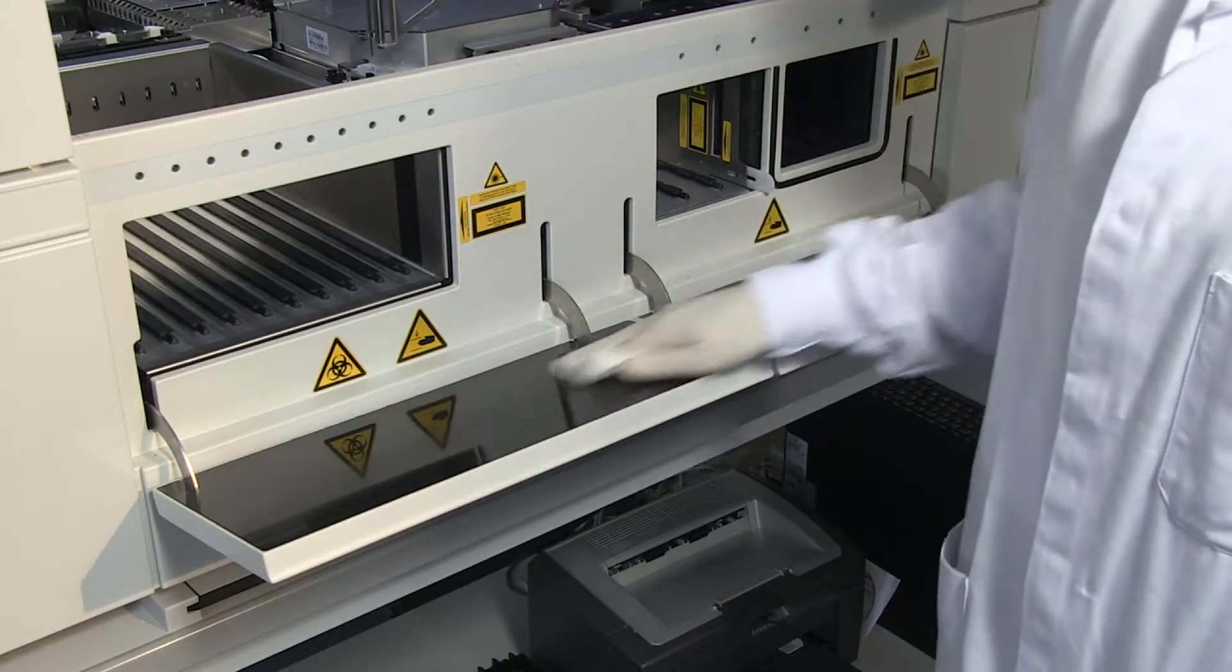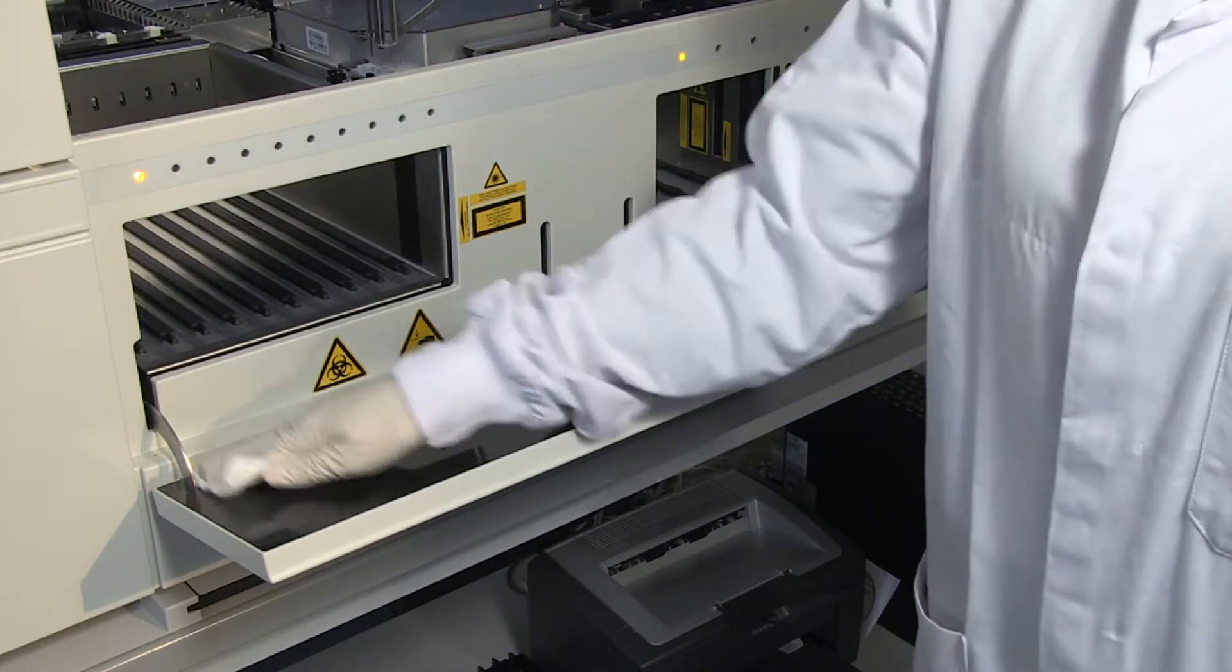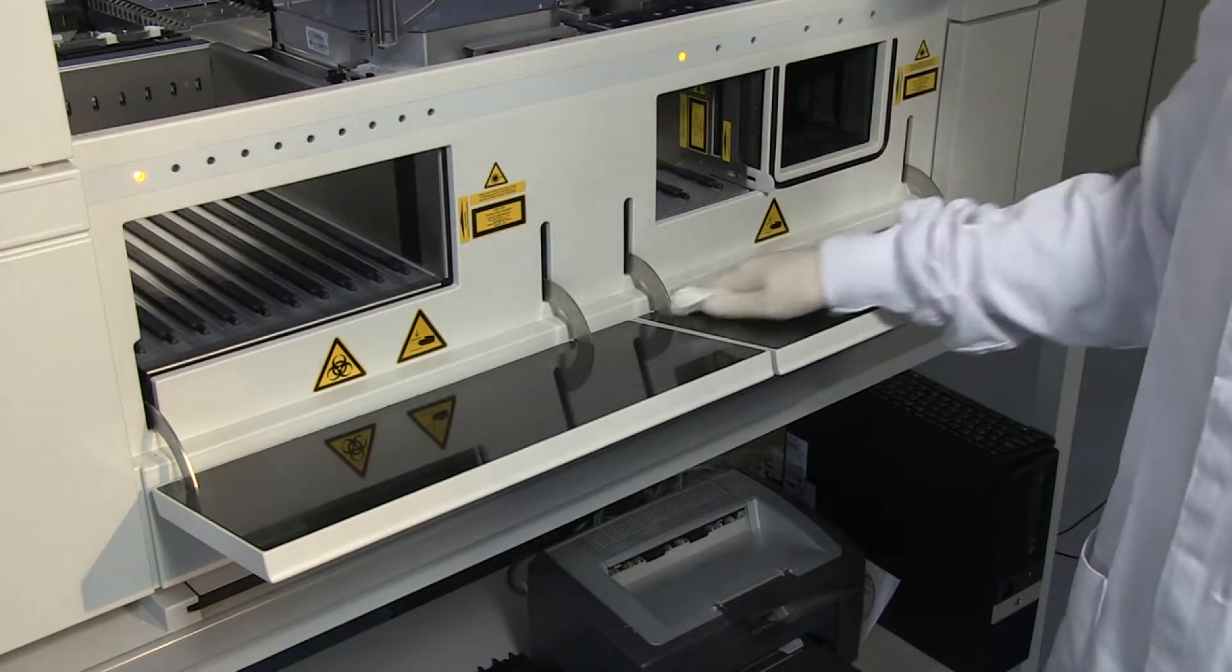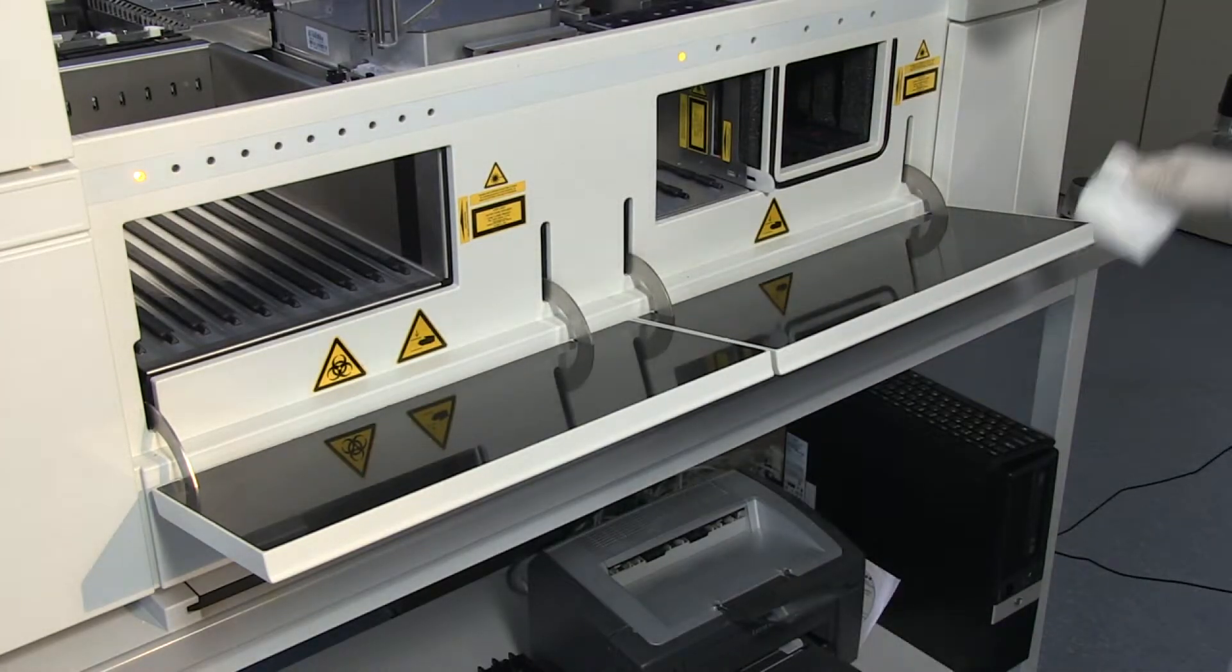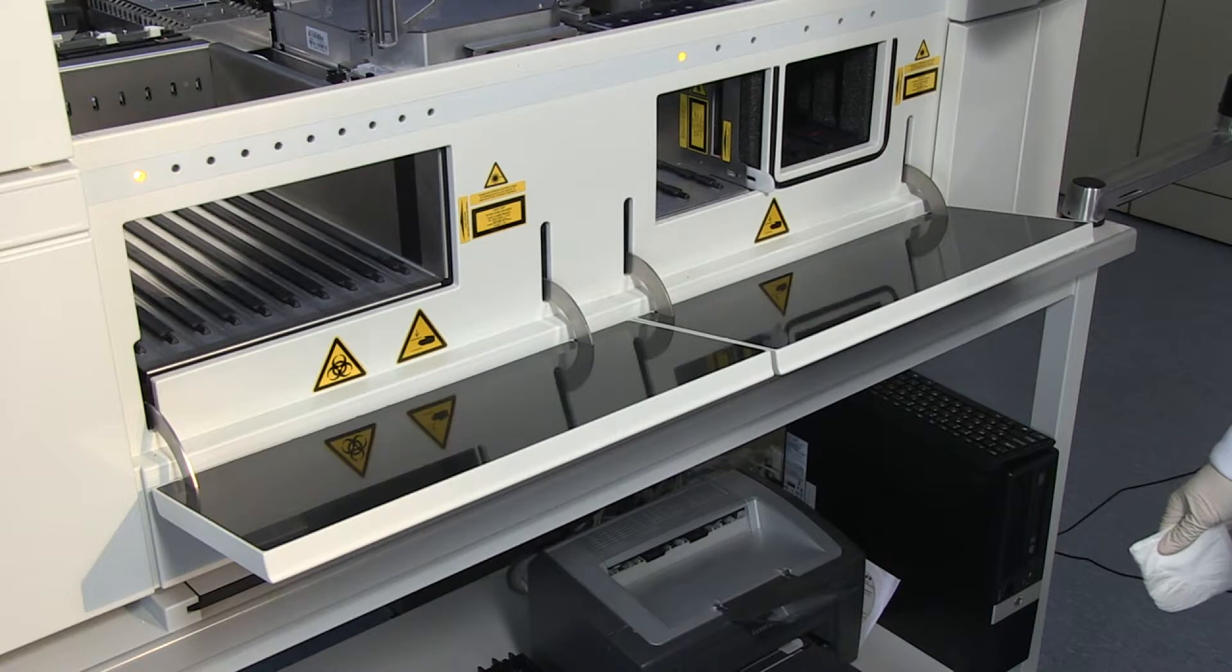Disinfect surfaces with bleach, 0.3% active chlorine, or ethanol 70%. An alcohol-based disinfectant based on ethanol, isopropanol, or n-propanol can be used as well.